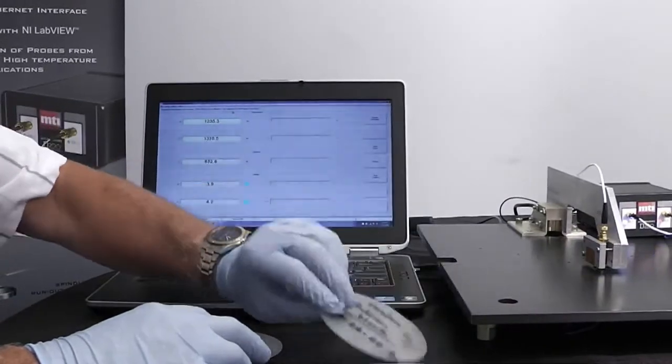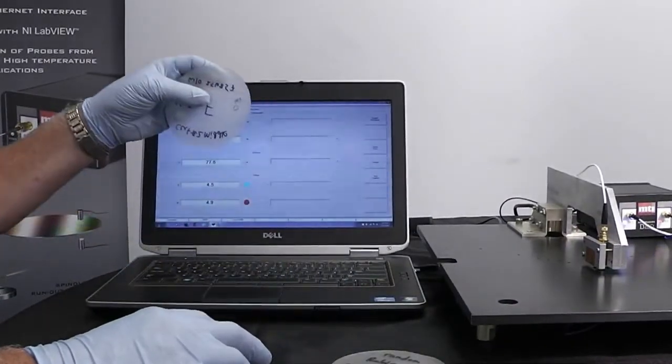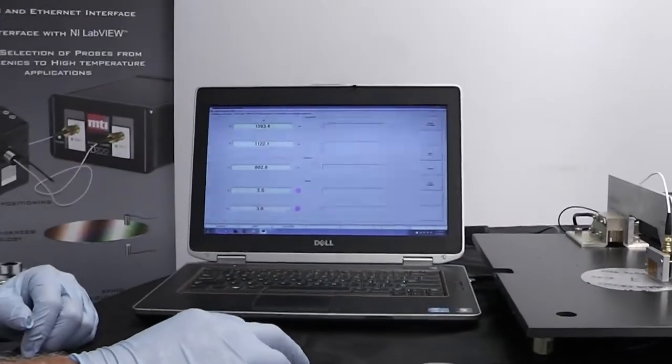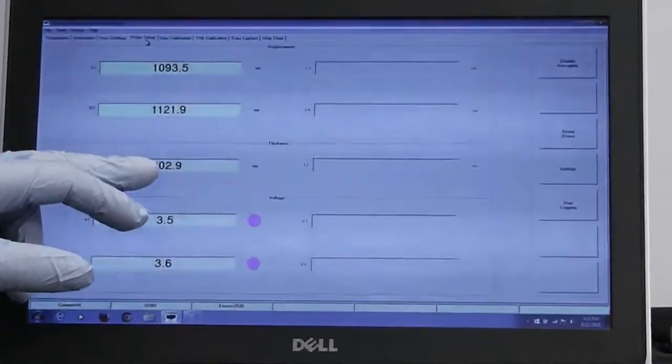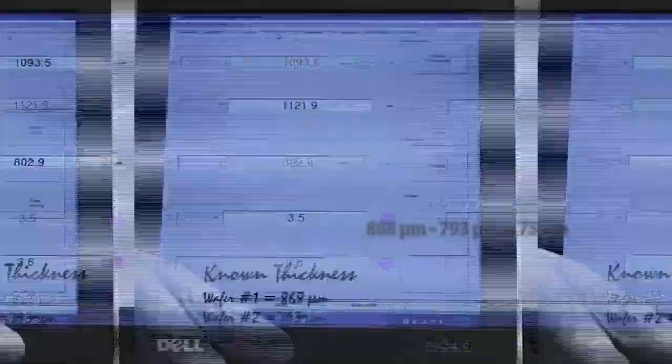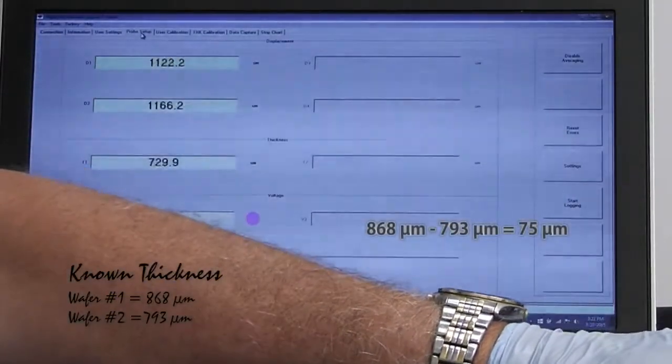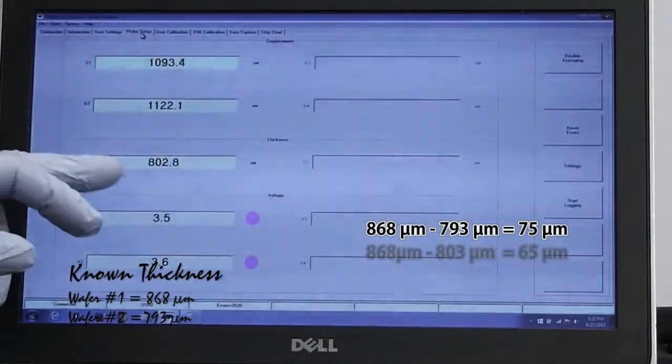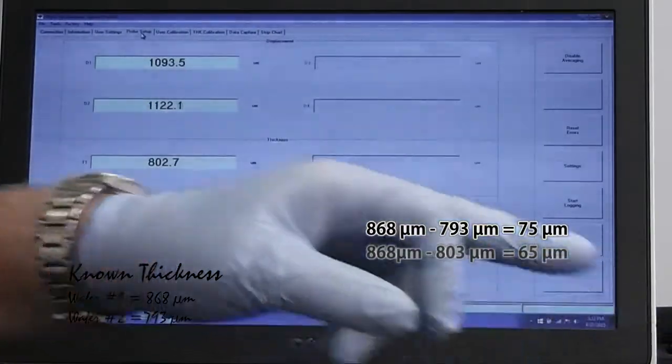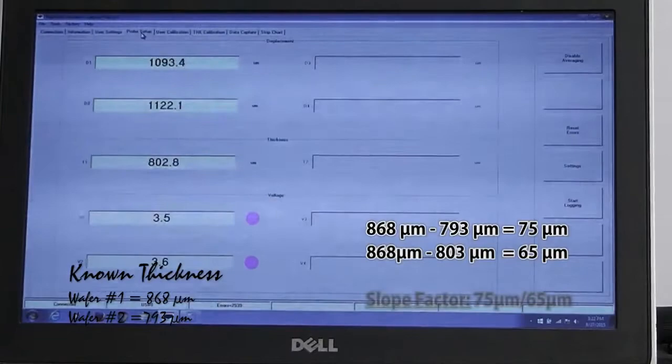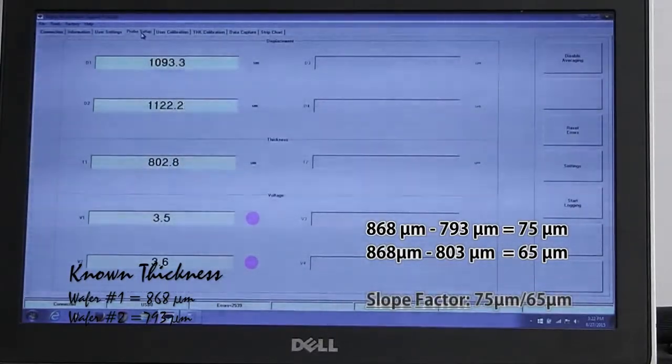The next thing we're going to do, we're going to take our second wafer which is 793, slide that between the probes and then we're going to measure what the reading is here. We know the difference between the two probes is 868 minus 793, we know that, the absolute delta difference. And then what we do is we take the difference between what the wafer actually is versus what is showing here. So we divide the difference between the known thickness by the apparent thickness and that gives us our new slope factor.